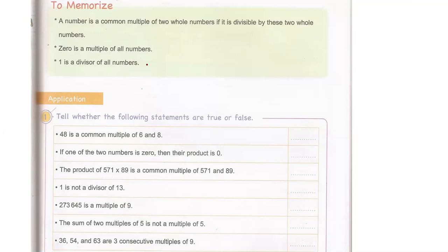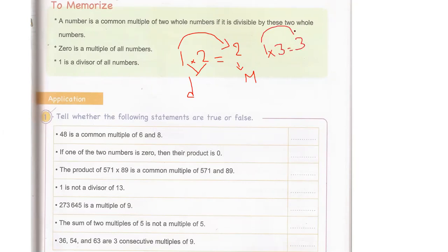One is a divisor of all numbers. One times two equals two — so we call one a divisor and two a multiple. One is a divisor of two. One times three equals three, so one is a divisor of three. One is a divisor of four. One is a divisor of five. Because any number multiplied by one stays the same, one is a divisor of all numbers.